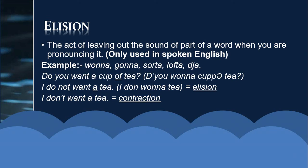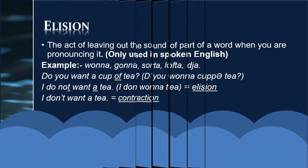Next, elision. Elision is a little bit challenging. It is the act of leaving out a sound or part of a word when pronouncing it. Elisions are only used in spoken English — you cannot use them in written English because they are not formal. For example: 'wanna,' 'gonna,' 'sorta.' In a sentence: 'Do you want a cup of tea?' becomes 'D'ya wanna cup of tea?' — 'I do not want the tea' is a contraction; 'I don't wanna tea' is an elision. You see the difference.